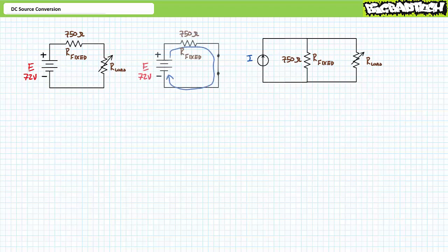To determine the value of the equivalent current source, one must remove the variable load resistor and place a low resistance short circuit across the terminals of interest. With a short circuit placed across the load terminals, the source sees only the fixed series resistor. An application of Ohm's law demonstrates that this is a value of 96 milliamperes. Our equivalent source configuration is therefore a 96 milliampere current source in parallel with a fixed resistance of 750 ohms.